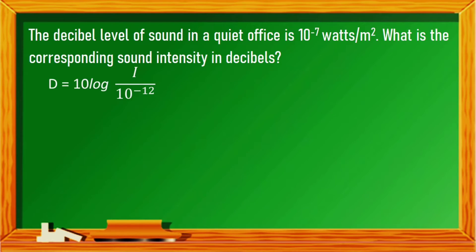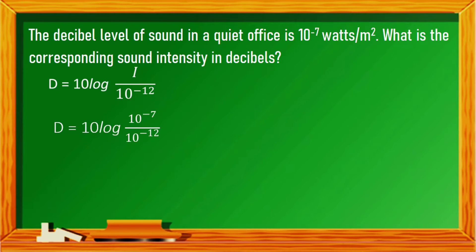Sample problem: the sound intensity in a quiet office is 10 raised to the power of negative 7 watts per meter squared. What is the corresponding sound intensity in decibels? We will use the decibel formula. Since the given sound intensity is 10 raised to the power of negative 7, let us substitute this into our formula. This becomes 10 times the logarithm of (10 raised to the power of negative 7 divided by 10 raised to the power of negative 12).